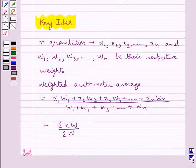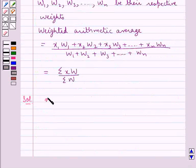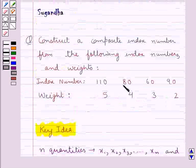So we can say that x₁ equals the first index number given which is 110, x₂ equals the second index number given which is 80,